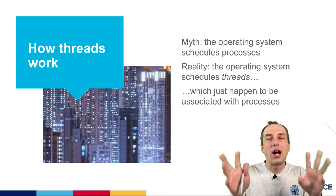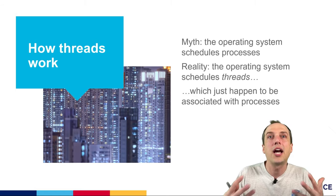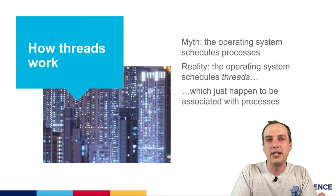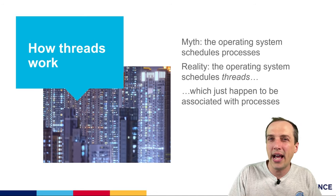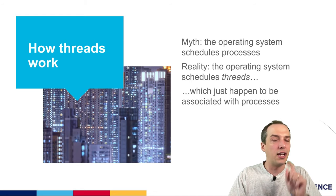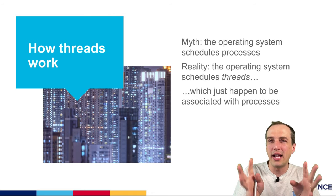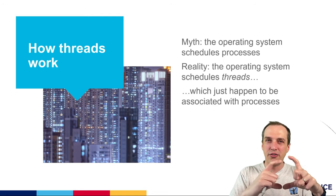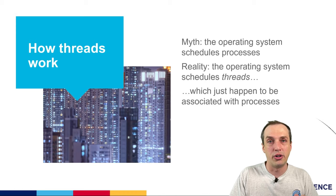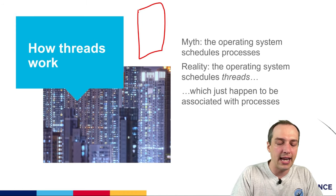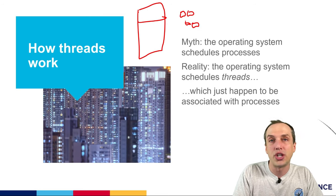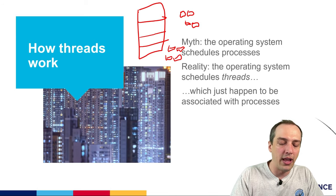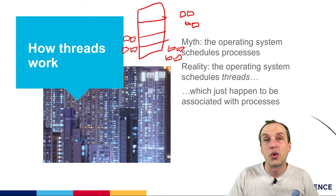This whole time we've been talking about processes, which are a good abstraction for the different resources available to your running code. A process is something that gets put onto the CPU and does operations. But in actuality, when Linux or Windows decides which task to run, it's choosing between different threads of control. Each individual process is a holding ground for one or more threads. What we've been thinking is one process has one stack and one set of registers — but in actuality, we can have many threads of control within the same process, each with their own individual stack, able to run independently.